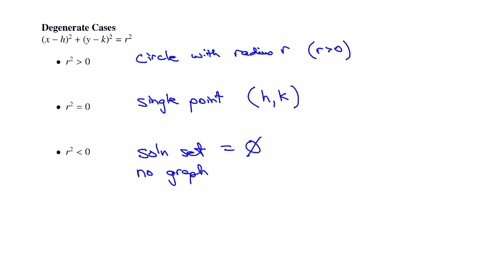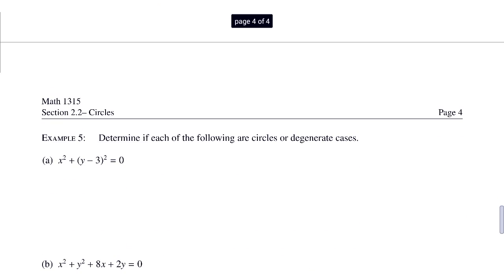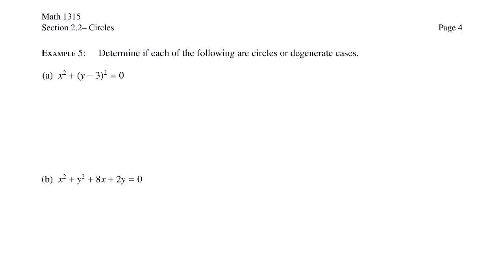Example 5: determine if each of the following are circles or degenerate cases. In part a, we have x squared plus y minus 3 squared equals 0. This equation is already in standard form, and we can tell that r squared equals 0. That is a degenerate case, and the solution set is only the point 0 comma 3, which would have been the center of the circle.